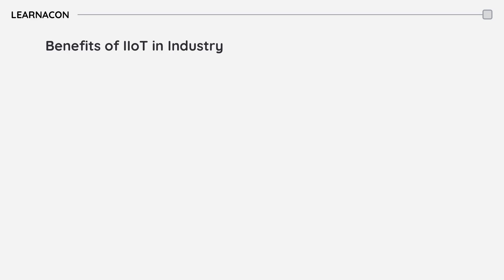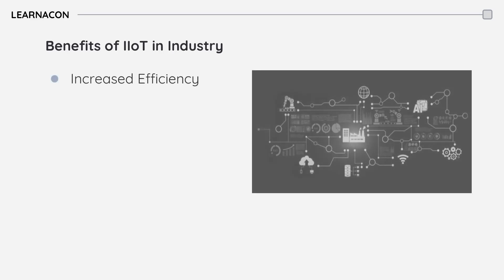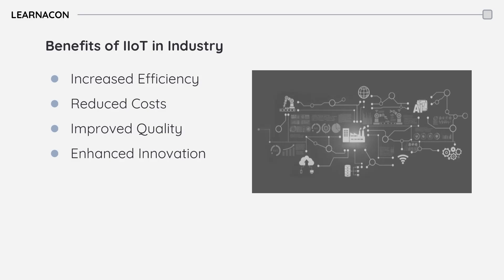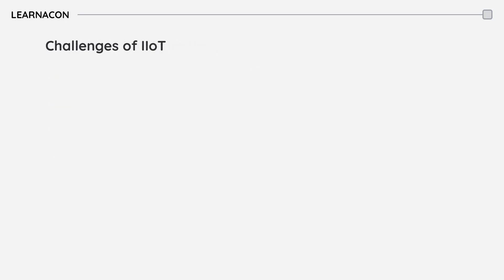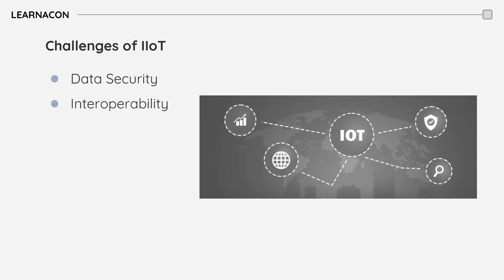The benefits of IoT in industry are numerous. Increased efficiency, reduced costs, improved quality, and enhanced innovations are just a few examples. By optimizing production processes, minimizing downtime, and monitoring hazardous conditions, IoT helps businesses thrive in a competitive market. While IoT offers immense potential, it also presents challenges. Data security, interoperability, and scalability are critical concerns that need to be addressed to ensure the successful adoption of IoT in industry.